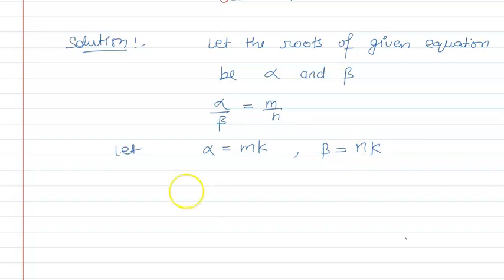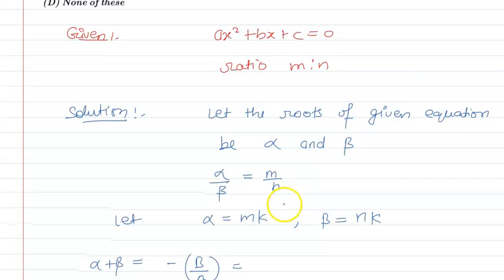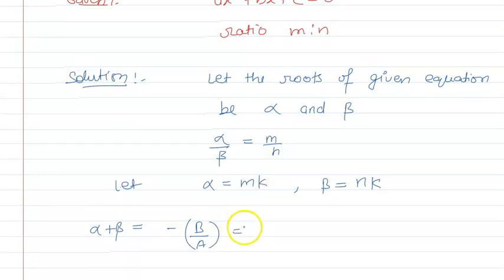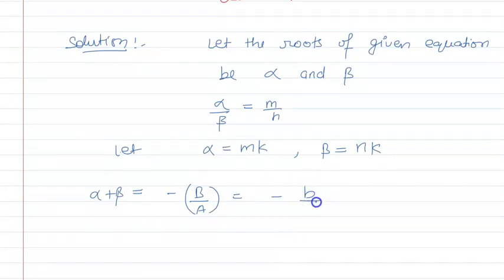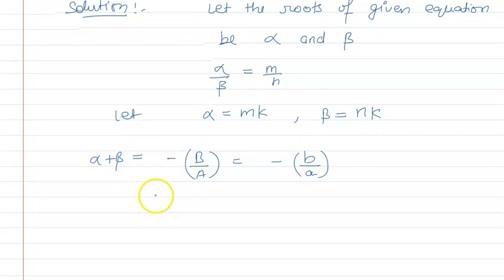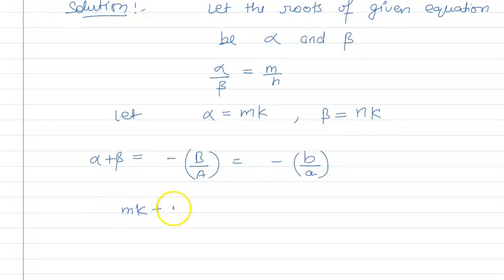Now, sum of roots for a quadratic equation is alpha plus beta equal to minus capital B upon capital A, where capital B is the coefficient of x and capital A is the coefficient of x square. So here minus b upon a, and alpha we have considered mk, so mk plus nk will be equal to minus b upon a. Let's say this is equation 1. We will use this later.